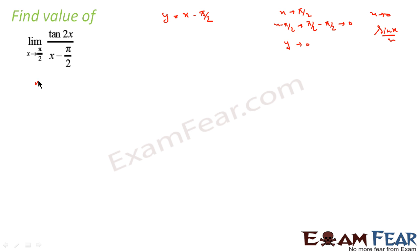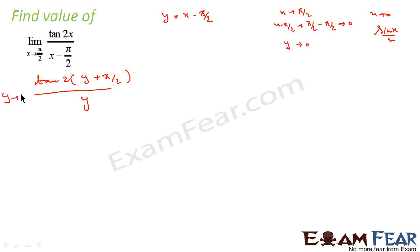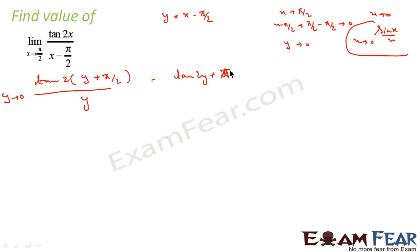Substituting, we get tan(2(y + π/2)) / y as y→0. Now tan(2y + π) = tan(2y), since tan has period π. So this simplifies to tan(2y)/y where y→0. We can write tan(2y) as sin(2y)/cos(2y), and we know the formula for sin(2y)/2y. So we multiply and divide by 2 to get: [sin(2y)/2y] × [2y/cos(2y)] × (1/y) — more precisely, the expression becomes [sin(2y)/2y] × [2/cos(2y)].